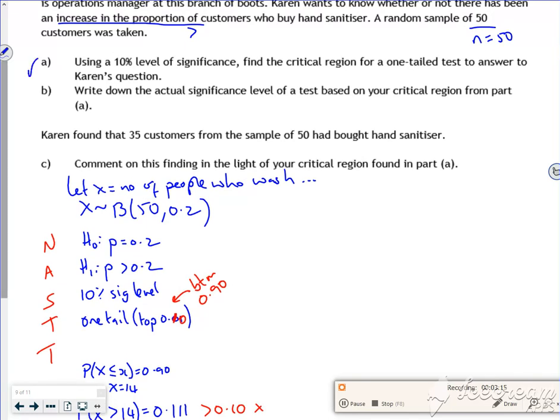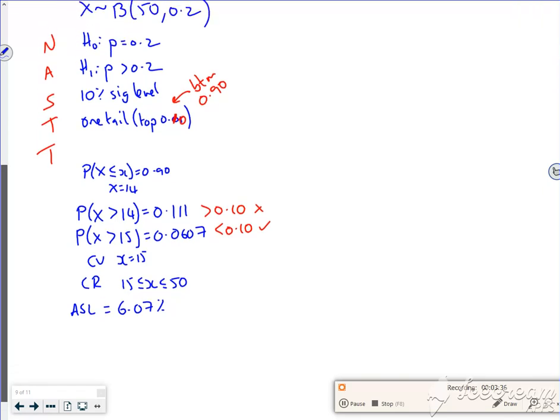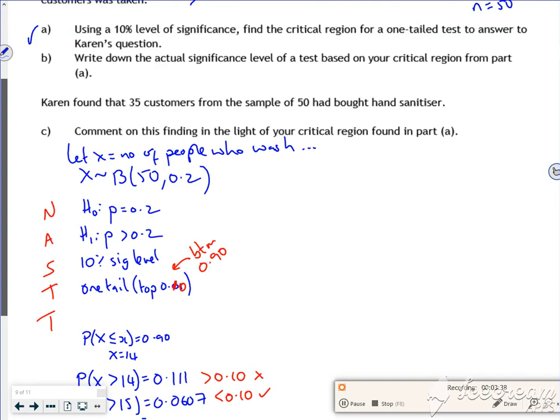Write down the actual significance level. So the actual significance level, the ASL, will be 6.07%. Right, so that's part A and part B done.